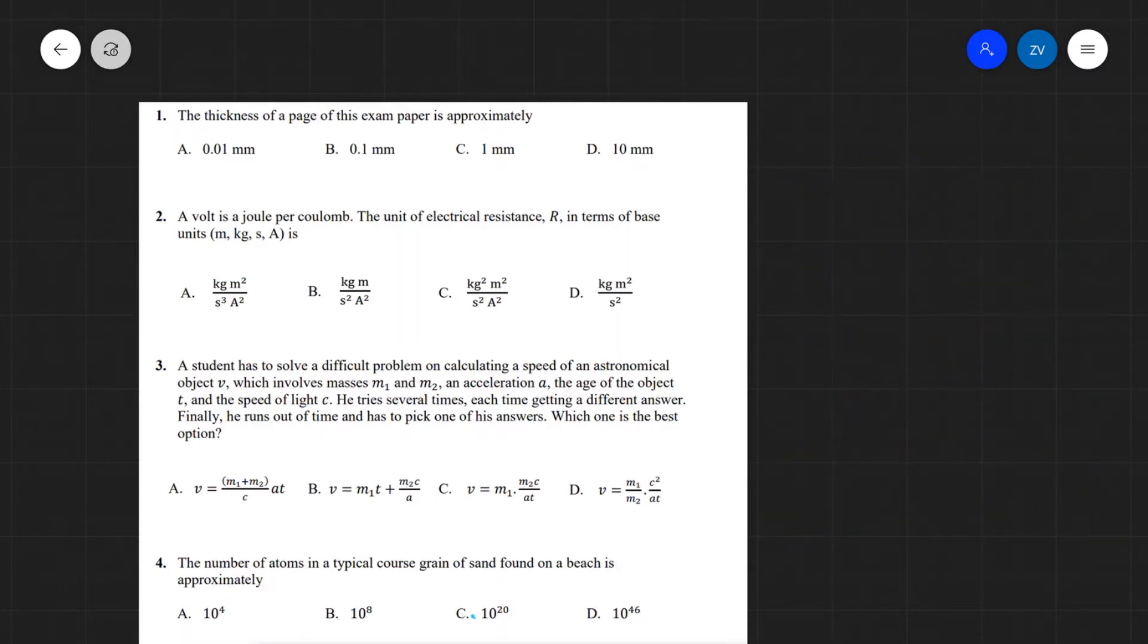The first question is that the thickness of a page in this exam paper is approximately. This is a classic estimation question. First off, it's not going to be one millimeter because if it was one millimeter, we'd be able to measure it with a ruler. If we take a ruler to a piece of paper, we're going to see that it's nowhere near a millimeter. It's about a tenth of it.